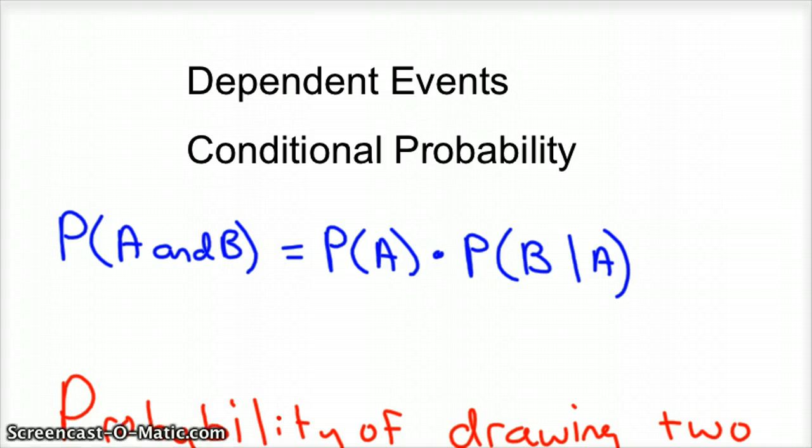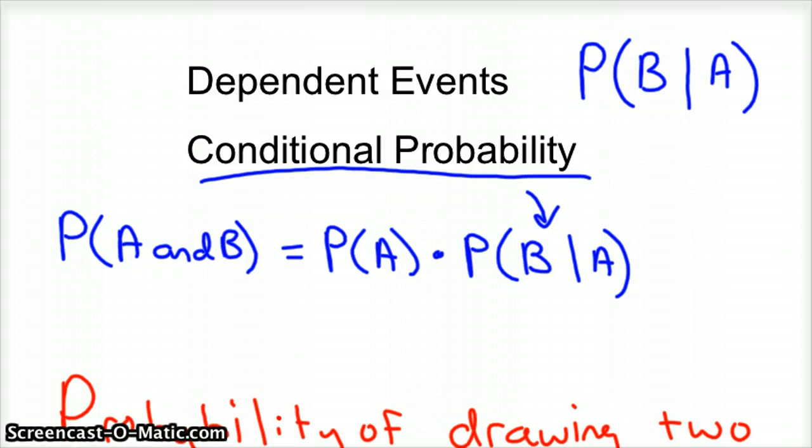So there's that conditional probability part right here. So what that means is this basically says, what is the probability of B given that A has occurred? So that's really all it means.